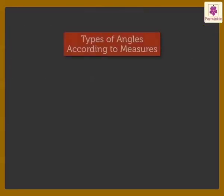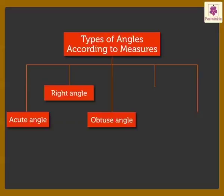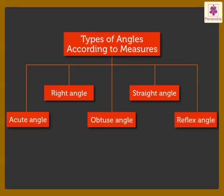Angles are of five types according to their measurements or size. They are Acute Angle, Right Angle, Obtuse Angle, Straight Angle, and Reflex Angle. Let us learn more about each one of them.